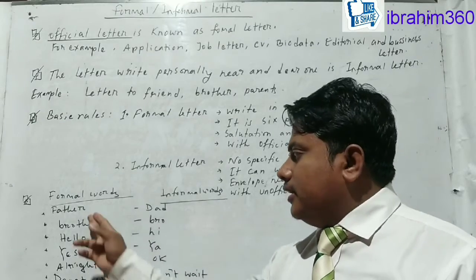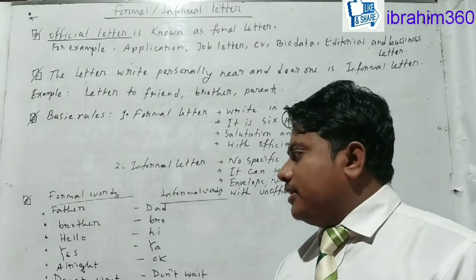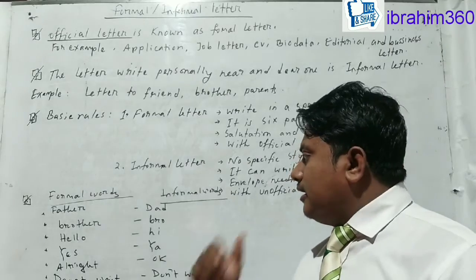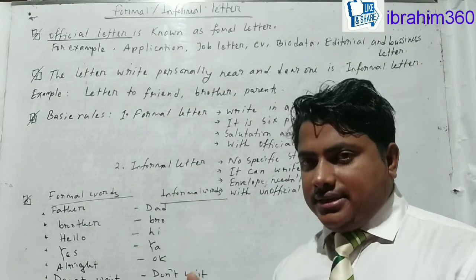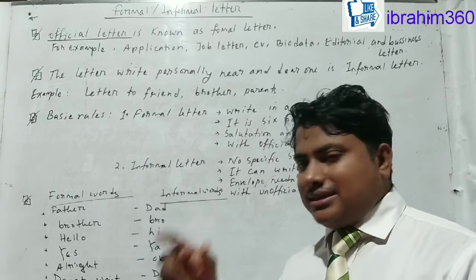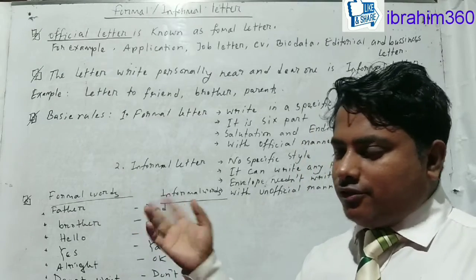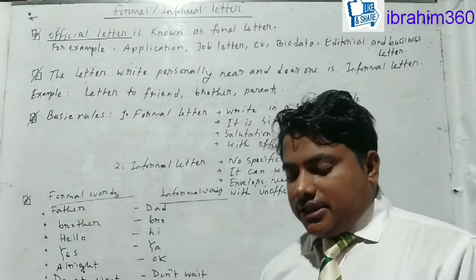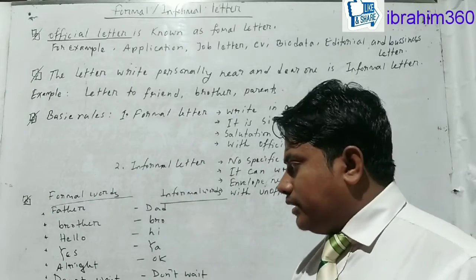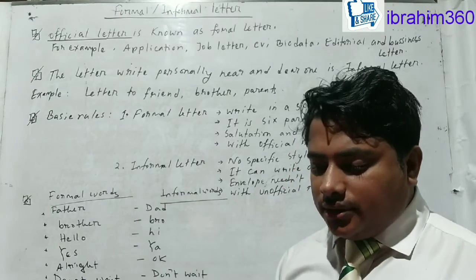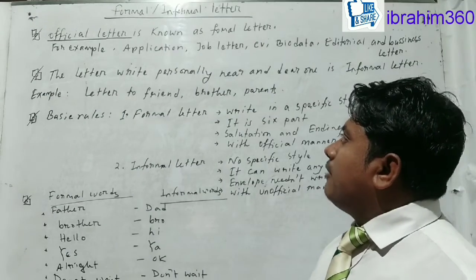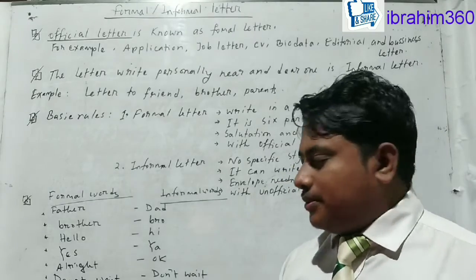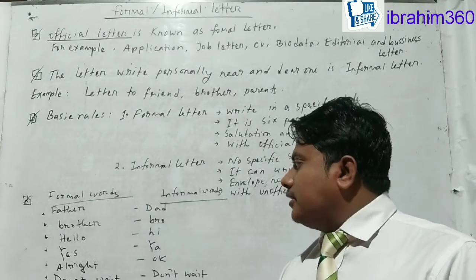For example, 'father' is a formal word — it is an official and decent word. But in informal letters, sometimes we use 'dad.' However, 'dad' is not acceptable in formal writing. So 'dad' is informal and 'father' is formal. Similarly, 'brother' is a totally official, decent, and formal word used in job letters and applications. 'Bro,' on the other hand, is an informal word.